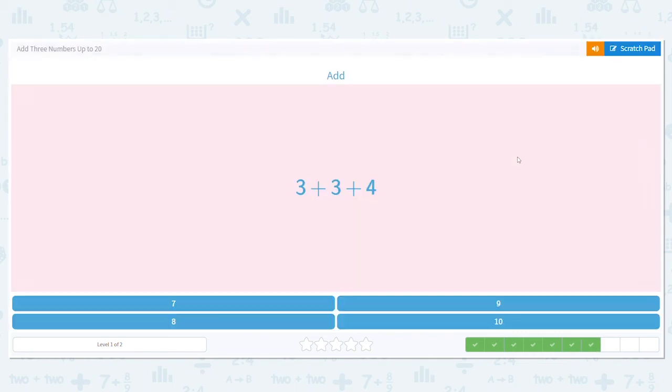Let's do another one. Three plus three plus four. What do I want to ask myself first? Are there any what? Doubles. Doubles. I see a double right here. What is three plus three? Six.